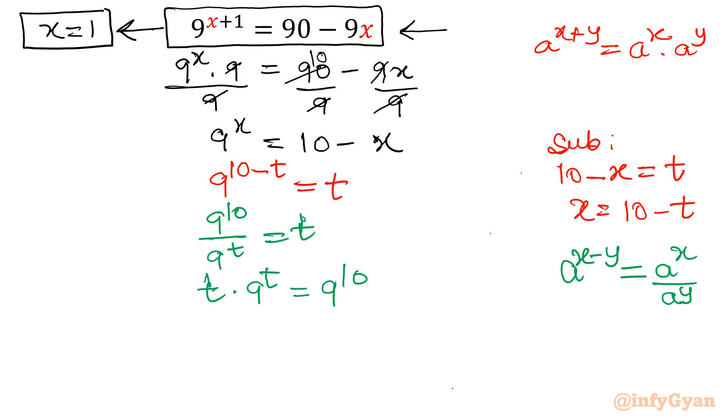Now this equation is same as or looks like, I won't say same as because there is no e. In place of e there is 9. First I will write the standard equation x times e raised to the power x is equal to A. It should be same first requirement and this should be e and right hand side should be constant. Then only we can use Lambert W function.